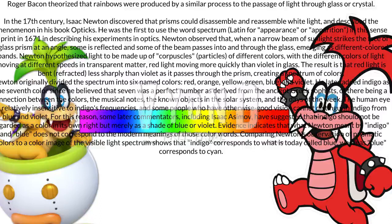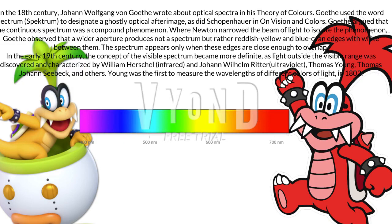The human eye is relatively insensitive to indigo's frequencies, and some people who have otherwise good vision cannot distinguish indigo from blue and violet. For this reason, some later commentators, including Isaac Asimov, have suggested that indigo should not be regarded as a color in its own right but merely as a shade of blue or violet. Evidence indicates that what Newton meant by indigo and blue does not correspond to the modern meanings of those color words. Comparing Newton's observation of prismatic colors to a color image of the visible light spectrum shows that indigo corresponds to what is today called blue, whereas blue corresponds to cyan. In the 18th century, Johann Wolfgang von Goethe wrote about optical spectra in his theory of colors.